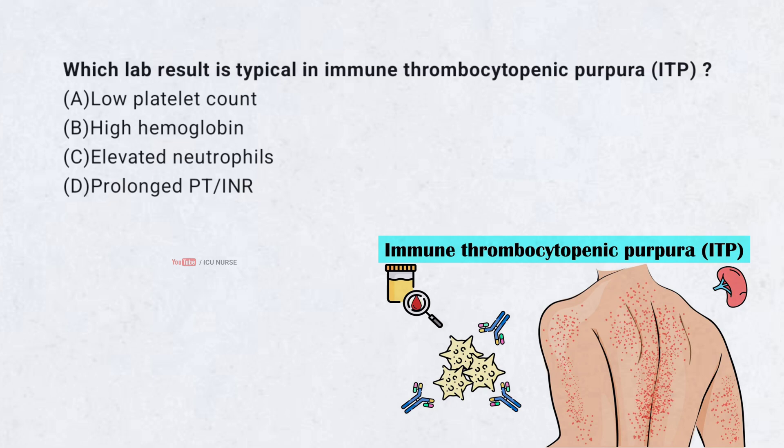Which lab result is typical in immune thrombocytopenic purpura (ITP)? A. Low platelet count, B. High hemoglobin, C. Elevated neutrophils, D. Prolonged PT-INR. Correct answer: A. Low platelet count.